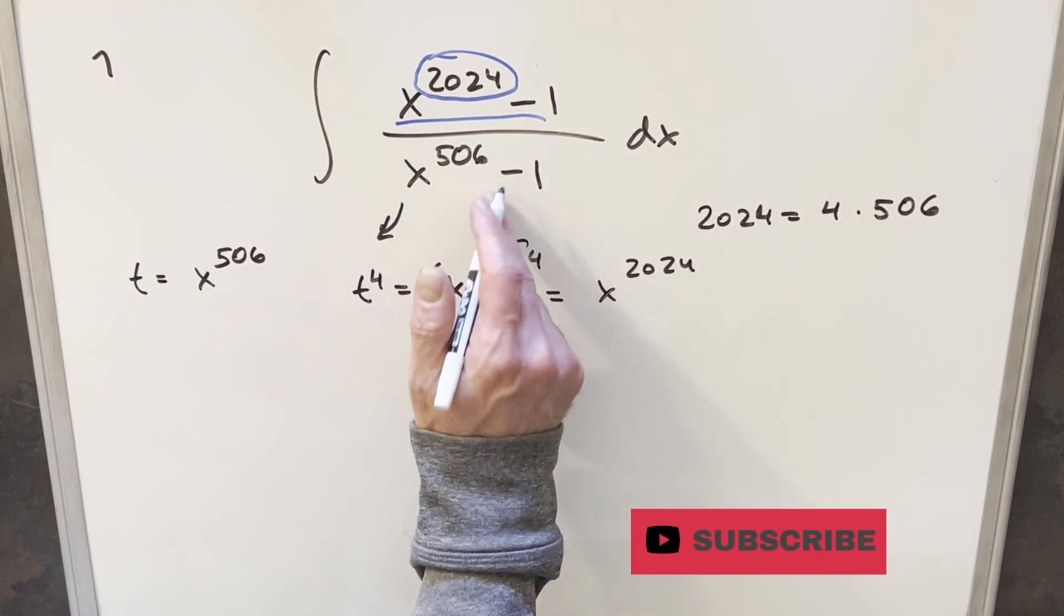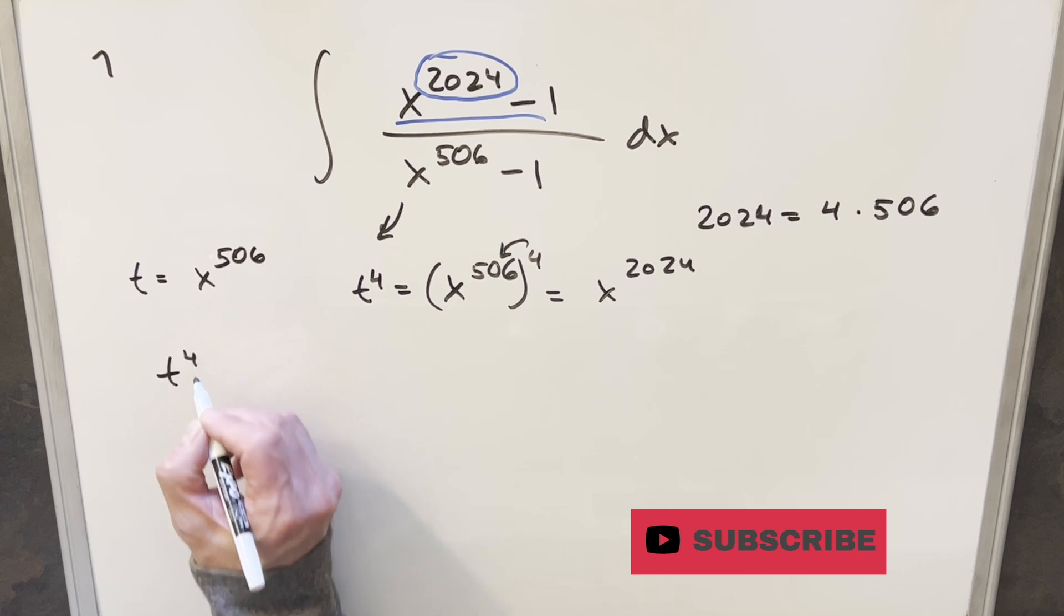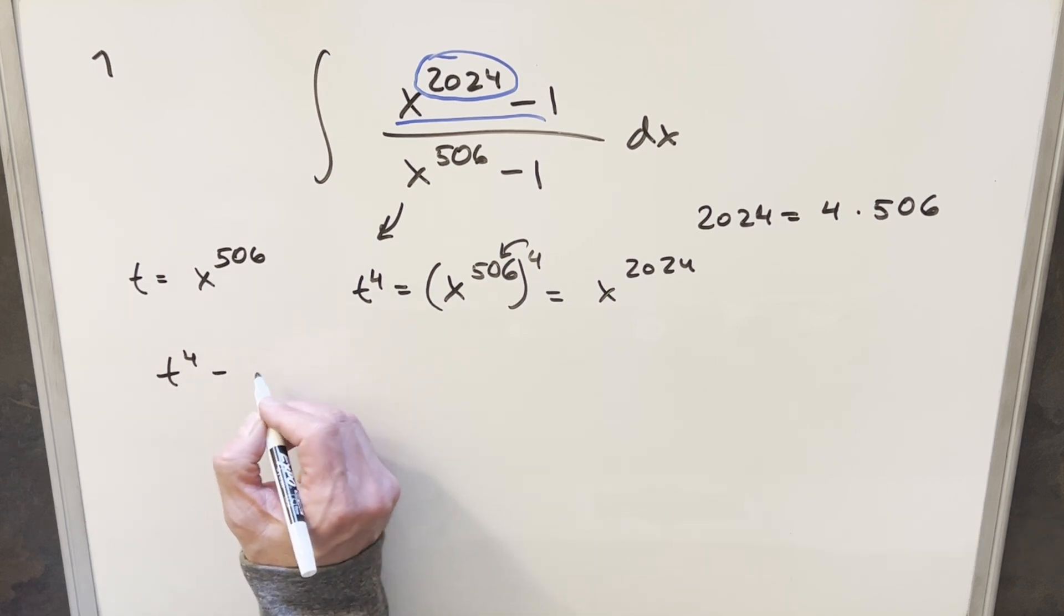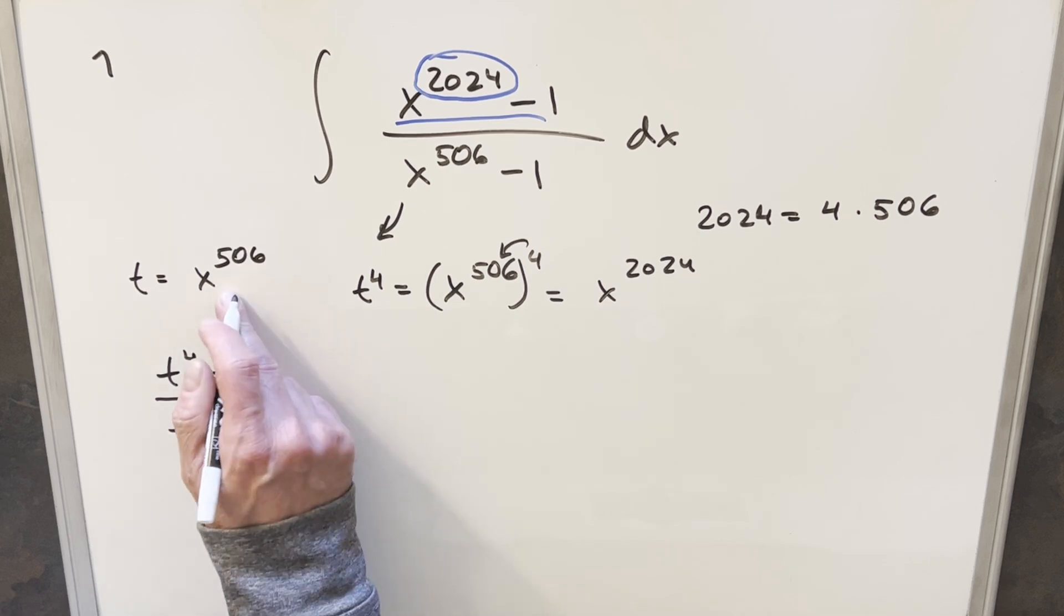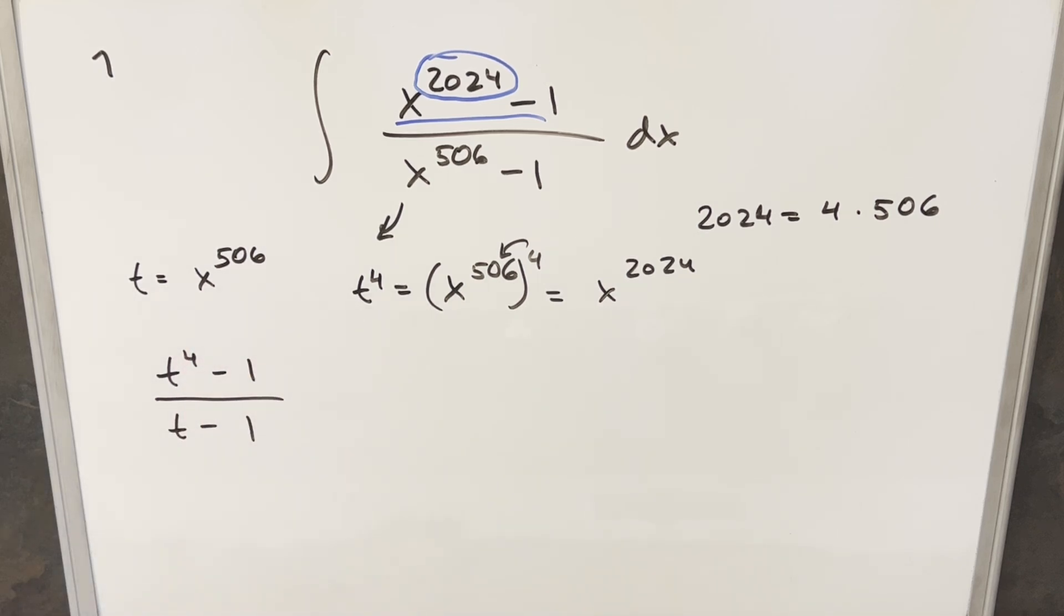So in order to simplify this fraction, what we actually have here with the substitution, just to kind of make it easier for me to write everything, easier to look at, we're going to have t to the 4 minus 1 over just t minus 1, because t is our x to the 506. But then there's a few different ways to factor. But I think what I want to do here, I'm just going to do difference of two squares. So what I'll do is I can write this as t squared plus 1 times t squared minus 1 all over t minus 1.